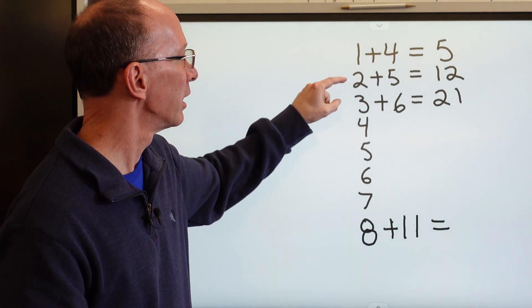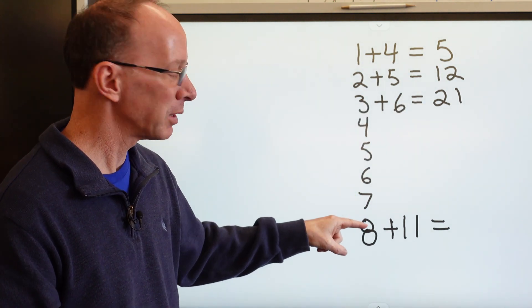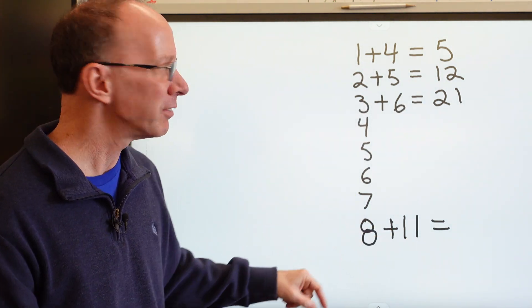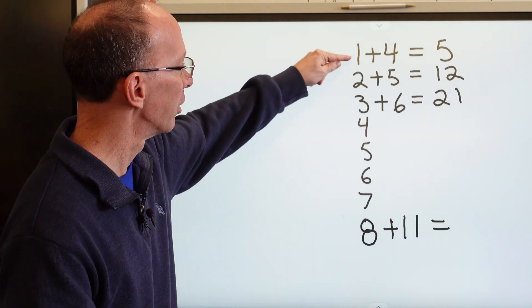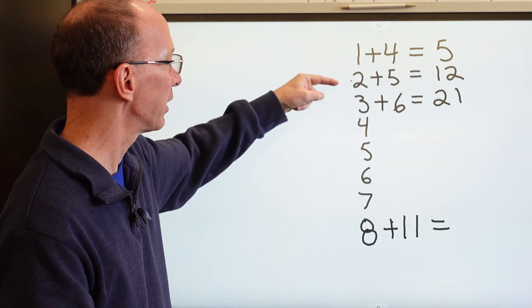We had 1 plus 4 equals 5, 2 plus 5 equals 12, and then we have 8 plus 11. The reason I put 8 plus 11 is because there's a pattern right here: 1, 2, 3, 4, 5, 6. And I'm just continuing with the pattern.